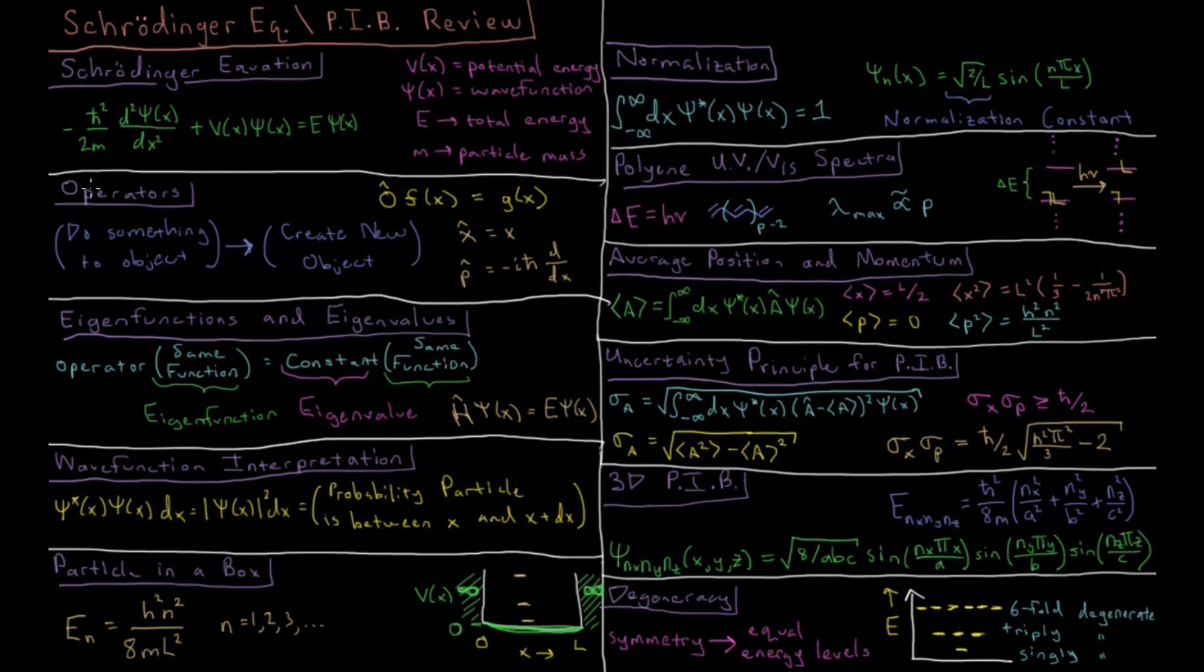Some special properties of operators include eigenfunctions and eigenvalues. An eigenfunction and eigenvalue happen when you have an operator acting on a function, and the resulting thing on the right-hand side is a constant times the same function again. In that case, the function is referred to as an eigenfunction of this operator, and this constant is referred to as its eigenvalue.